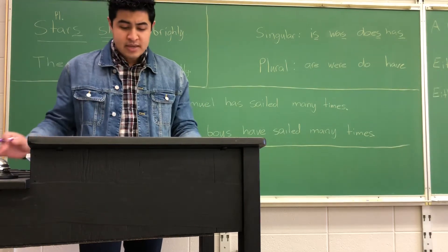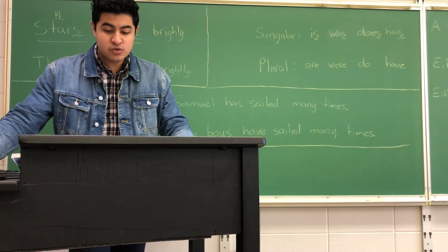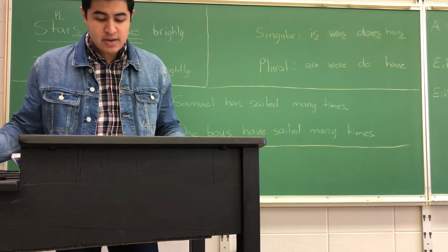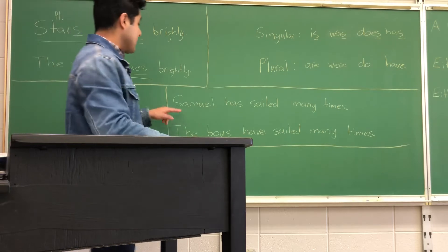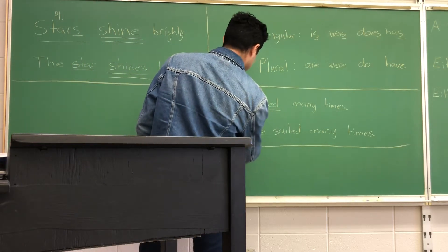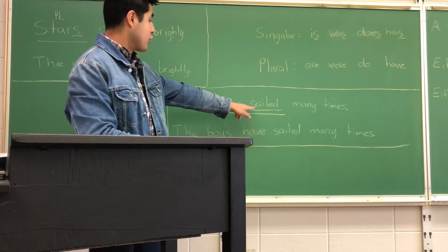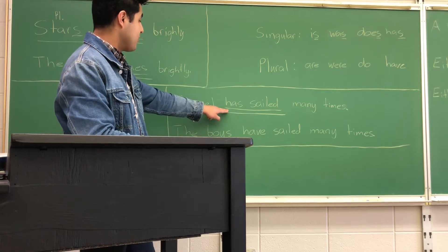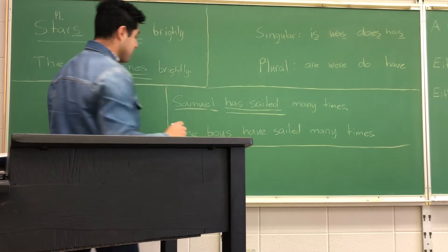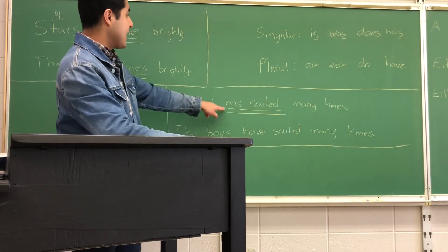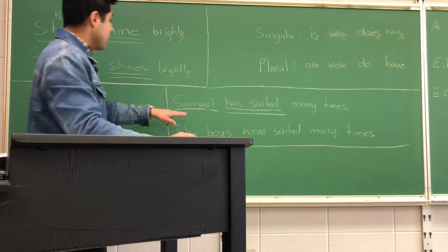In a verb phrase, only the helping verb has to change forms to make the verb singular or plural. So we have our sentence with the verb phrase 'has sailed': 'Samuel has sailed many times.' Our main verb is 'sailed,' our helping verb is 'has.' Our subject is Samuel, which is singular, so it has to take a singular verb — and there we see 'has' is part of our singular verb list.